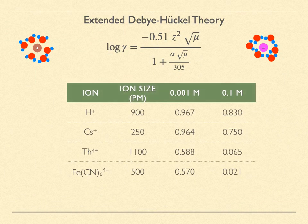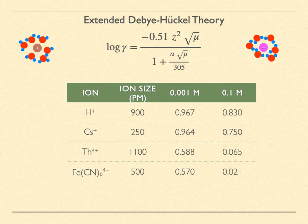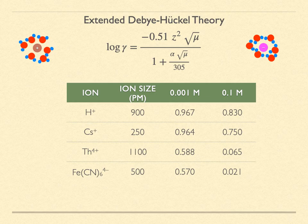The ion radii range from as small as 250 picometers up to 1100 picometers. Activity coefficients range from 0.967 for H-plus ions in a 0.001 molar ionic strength solution down to 0.021 for the ferrocyanide at the 0.1 molar ionic strength.